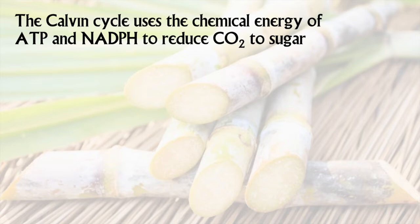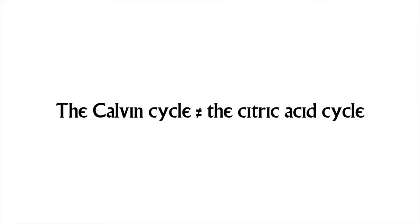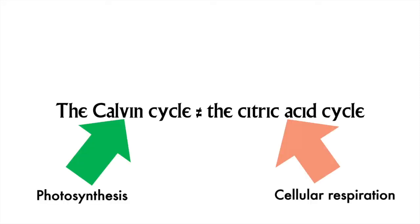Before we get into it, there is something you should be fully and clearly aware of. The Calvin cycle is not the citric acid cycle. Both are metabolic cycles, and both start with C and end with cycle. But the Calvin cycle is part of photosynthesis. The citric acid cycle is part of cellular respiration, and you know that it produces two-thirds of your carbon dioxide, NADH, and FADH2.